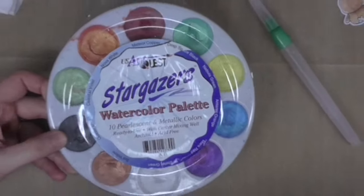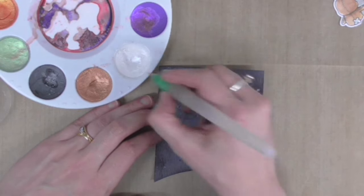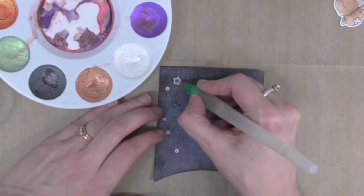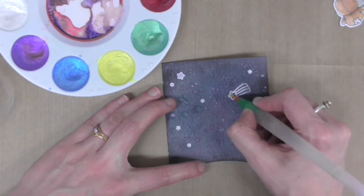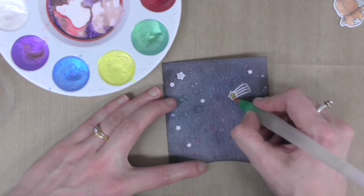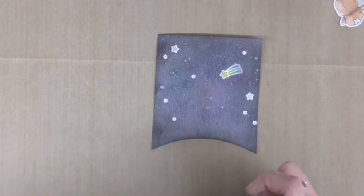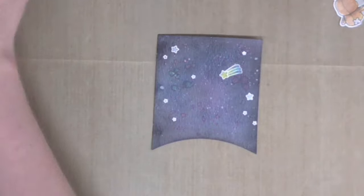I'm going to use this Stargazer's watercolor palette to color in these stars. It's a pearlescent paint. I'm using white for the stars except for the shooting star, which is going to be yellow. I think this is going to look beautiful when the LED shines through. The light will pick up and reflect off all those pearlescent crystals.